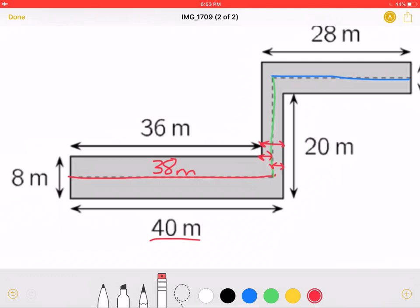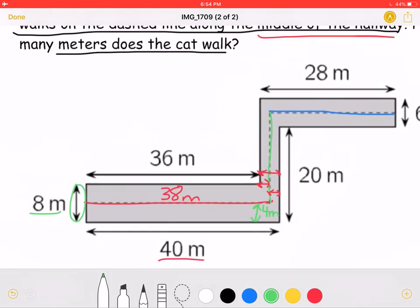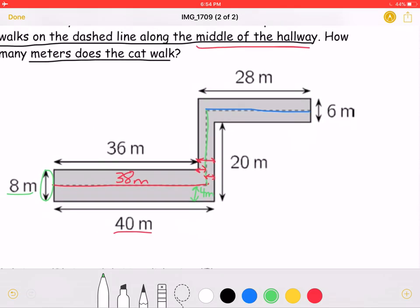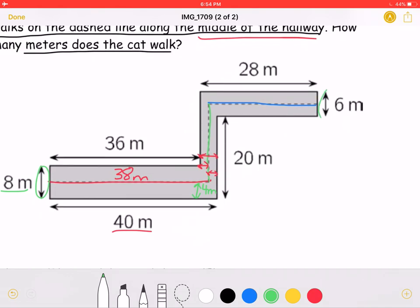Now, let's take a look at the green part. Knowing that this length is 8 meters, we know that each half of it must be equal to 4 meters. So from here to here is 4 meters. Now, looking at this top part, we know that this is 6 meters, so half of it must be 3 meters.